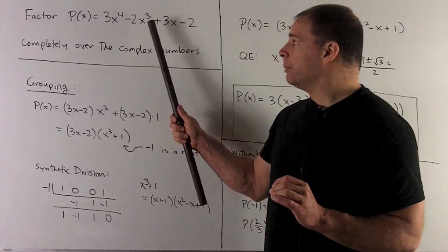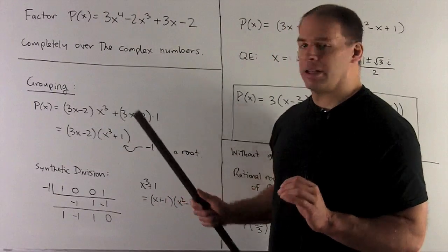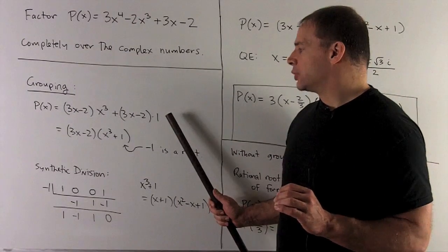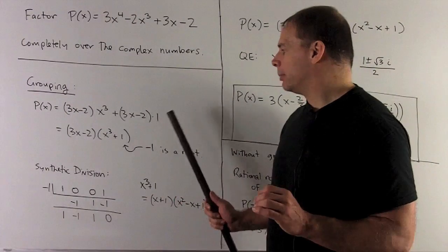From the first one, we'll have an x^3. From the second one, we'll have a leftover 1. So I recombine, I'll have x^3 + 1.